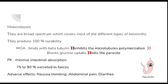Mebendazole is the first drug of choice among benzimidazoles. It is a broad-spectrum drug covering most types of helminths and produces 100% curability. Its mechanism of action involves binding with beta-tubulin, which inhibits microtubule polymerization in the worms, and blocks glucose uptake — without glucose the parasite cannot live, so the drug effectively kills it.